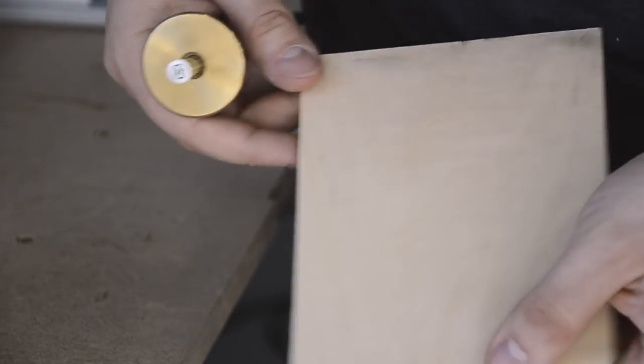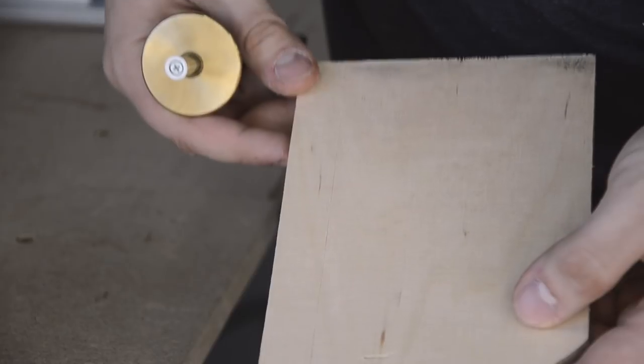This is often necessary when producing classic wood joints where very precise markings are required for a backlash-free joint.